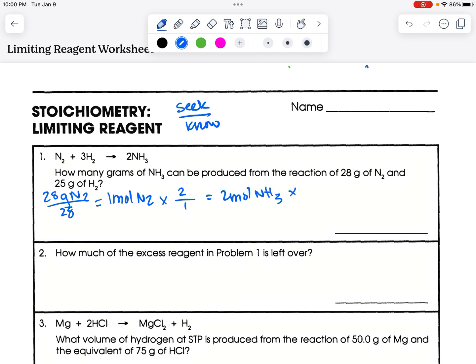And then we need to multiply by the GFM of NH3, so nitrogen is 14, hydrogen is 1, but there are 3 of them. So that's 17 grams per mole, and then you get 34 grams NH3. That's not necessarily our answer, so let's do the other one.